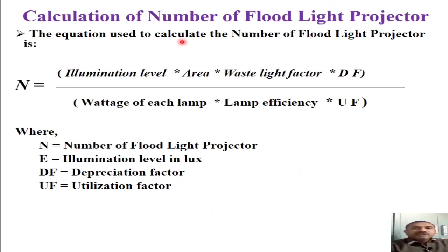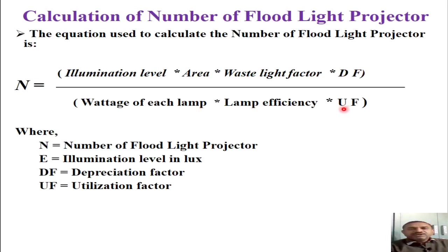Now let us see how to calculate the number of floodlight projectors for a given surface to be illuminated. The equation for N, the number of floodlight projectors, has a numerator containing four terms: illumination level, area, waste light factor, and depreciation factor. The denominator contains three terms: wattage of each lamp, efficiency of the lamp, and utilization factor. Considering all seven terms, we can calculate the number of projectors required for the given surface.